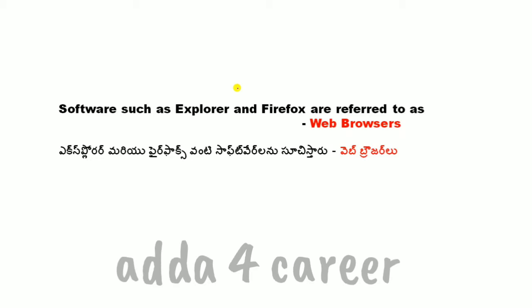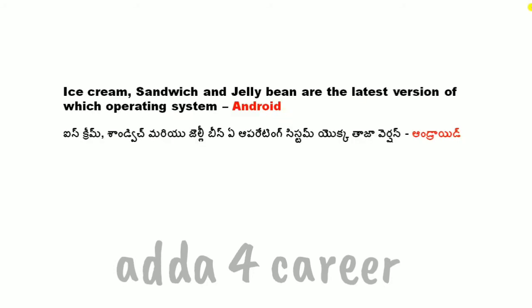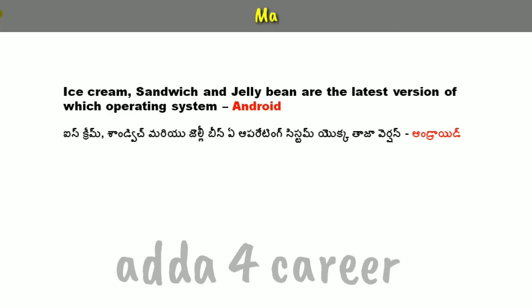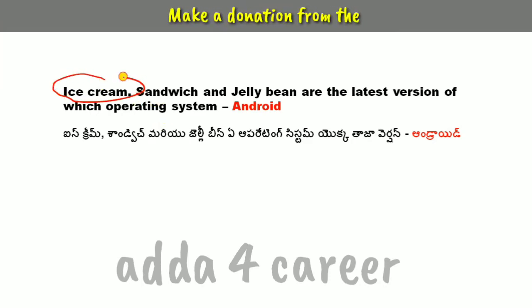Firefox and Internet Explorer are referred to as web browsers. Google Chrome, Firefox, and Explorer are all web browsers. Ice Cream Sandwich and Jelly Bean are versions of Android OS.